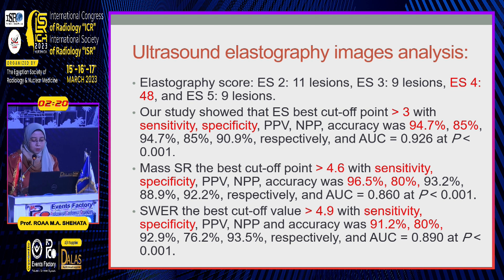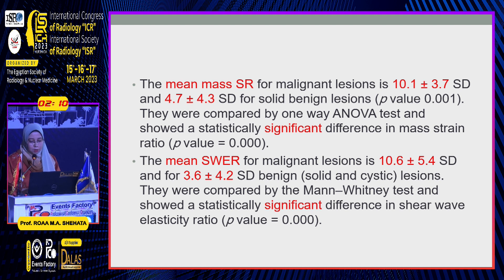The shear wave elasticity ratio best cutoff point of greater than 4.9 showed sensitivity and specificity of 91.2% and 80%. The mean mass strain ratio for malignant lesions was 10.1 ± 3.7 and for benign lesions was 4.7 ± 4.3, with a statistically significant difference. The mean shear wave elasticity ratio for malignant lesions was 10.6 ± 5.4 and for benign lesions was 3.6 ± 4.2, also statistically significant.